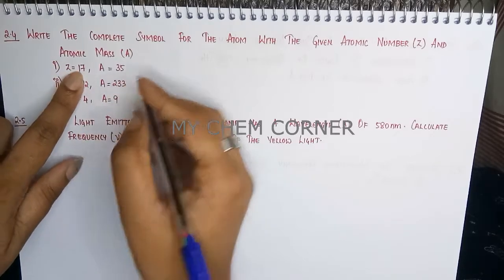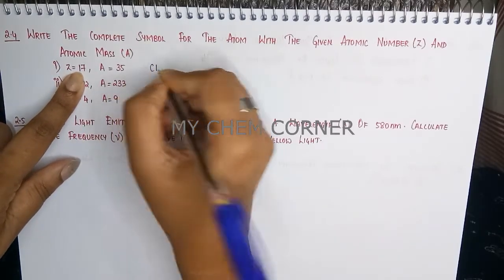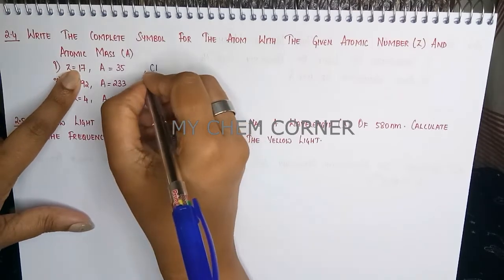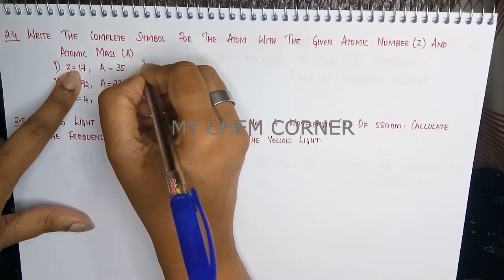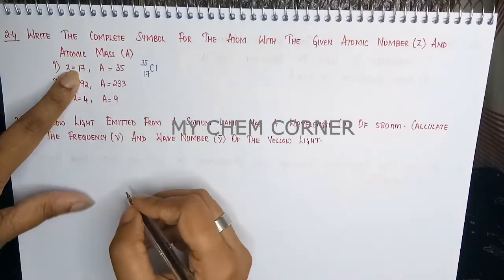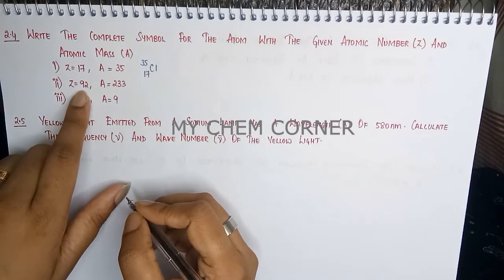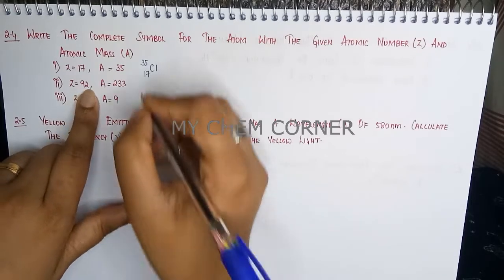For an atomic number 17, your atom here is chlorine. Now the atomic number is written below and atomic mass is written above. So that is your answer for the first one.